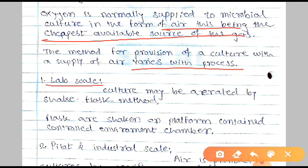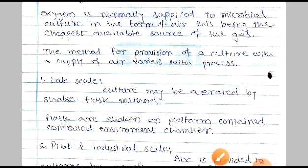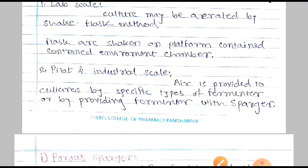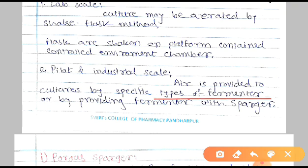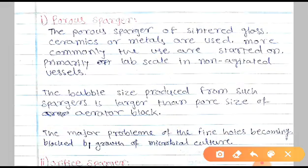The method for provision of culture with the supply of air varies with the process. The processes are lab scale, pilot scale, and industrial scale. According to suitability, methods are used for aeration. For lab scale, we use the shake flask method, where the flasks are shaken on a platform continuously to provide air to the microorganisms placed inside the broth.